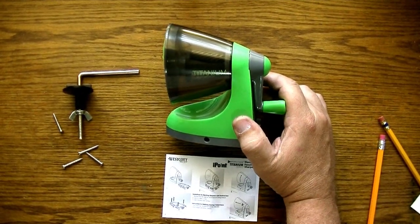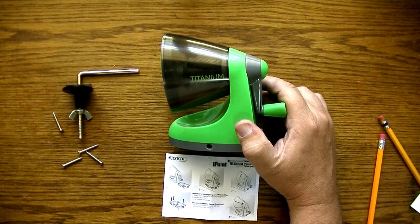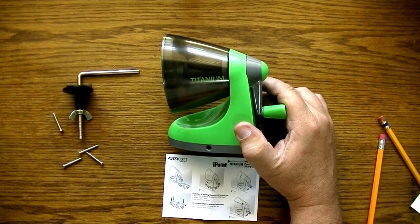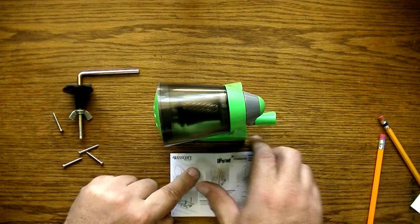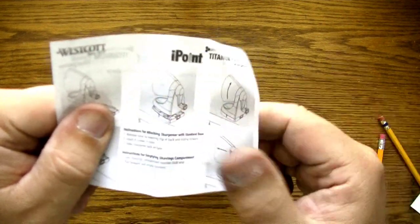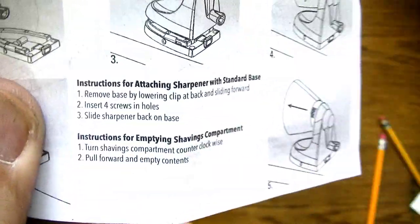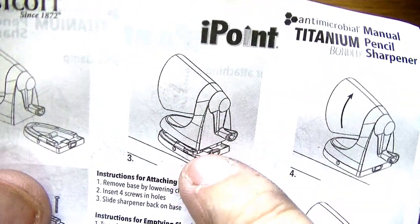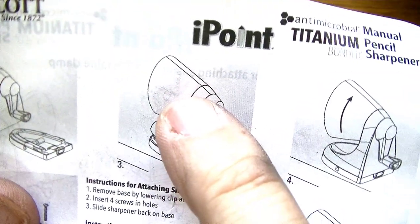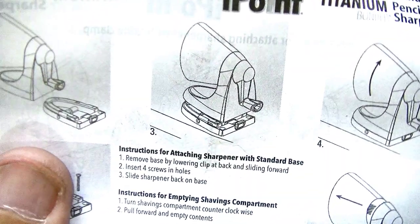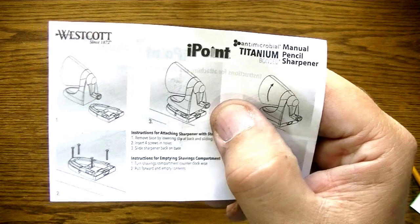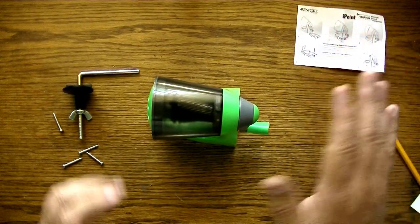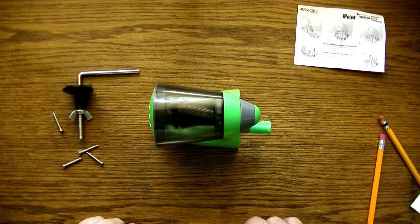Okay, let me tell you what I like and what I don't like about this iPoint titanium bonded manual pencil sharpener. I don't like the instructions. That one in particular. Notice it says remove base by lowering the clip at back and sliding forward. It needs to specify what do you slide forward - the main unit or the base. I assumed the base, it meant the main unit. So just to avoid making me look like a dummy, give me better instructions. That's the part I didn't like - that's minor, but it has nothing to do with the pencil sharpener itself.